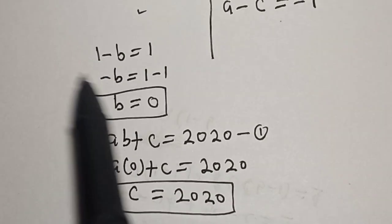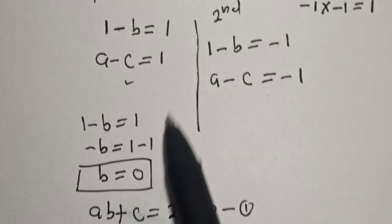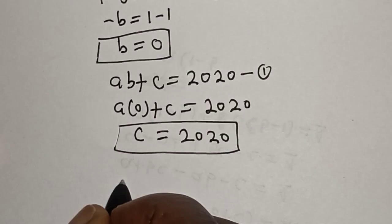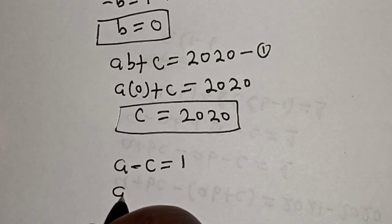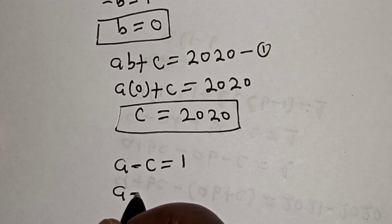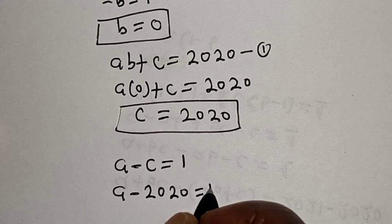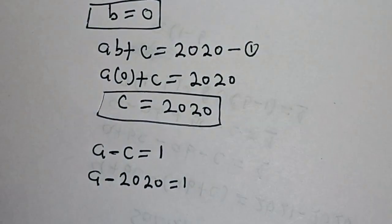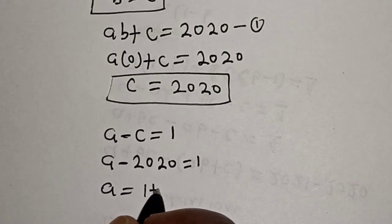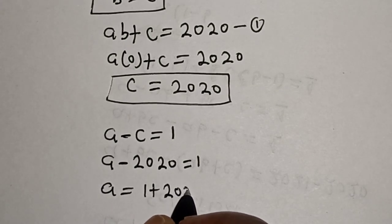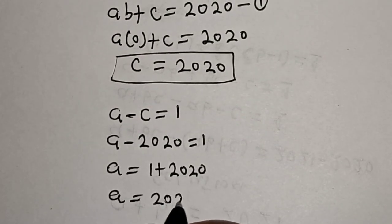Then from Case 1, A − C = 1. Substituting C = 2020: A − 2020 = 1, so A = 1 + 2020, therefore A = 2021. That is the value of A from the first case.